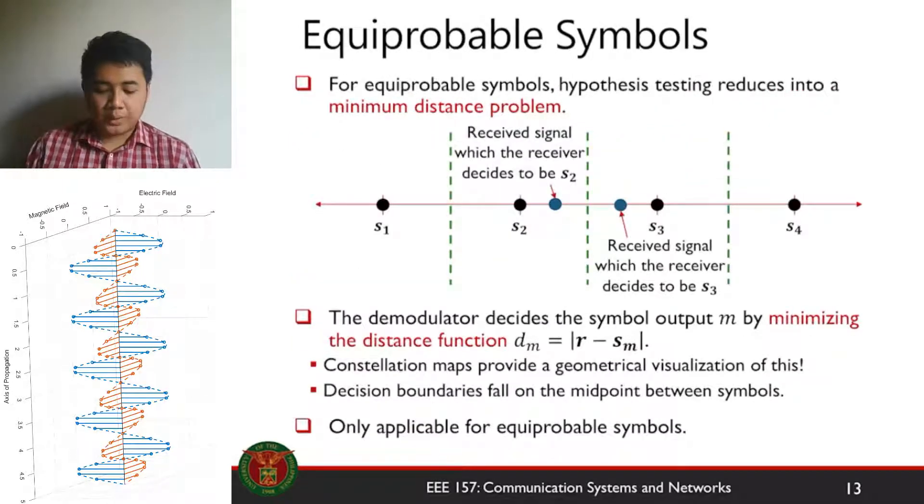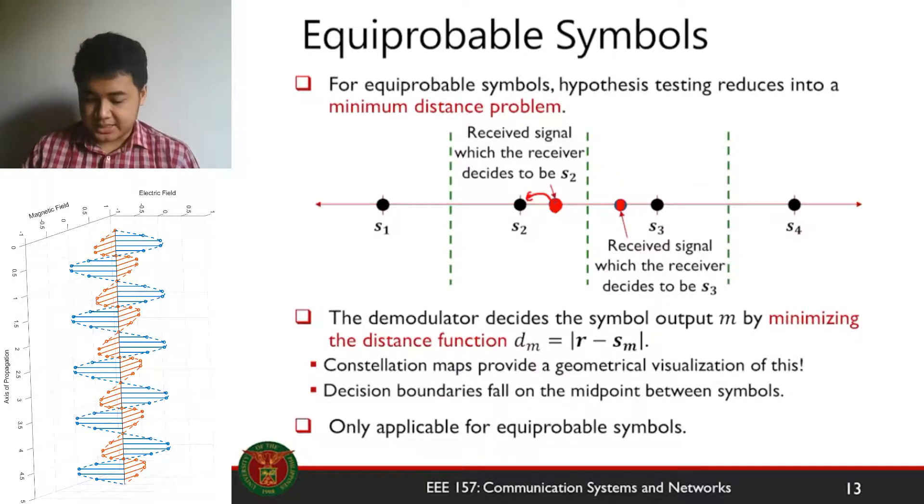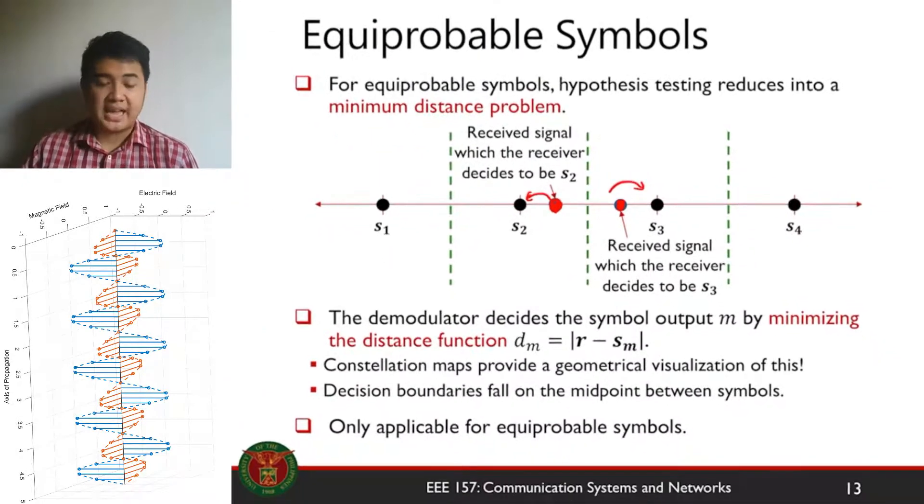I've already told you this, but the easiest setup is the maximum likelihood detection technique. This is where you use what you observe and see what symbol is closest to that observation. If we receive this symbol, the receiver will think it's S2 because this symbol is closest to S2. If we receive this symbol, the receiver will decide that this is S3 since it's closest to S3. We're talking about closeness here, about distance.